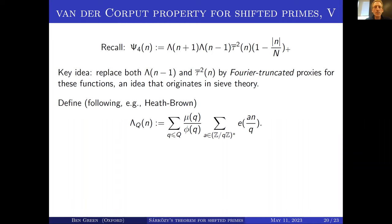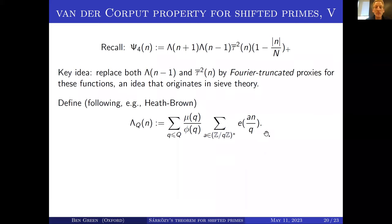Here is an example of a Fourier-truncated proxy for the von Mangoldt function, which I learned from work of Heath-Brown. This function λ_Q is the sum over q < Q of (μ(q)/φ(q)) times basically a Ramanujan sum — the discrete Fourier transform of the residues coprime to q. This function has been cooked up so that its Fourier behavior at rationals mimics that of the von Mangoldt function, but it's entirely supported on rational frequencies with fairly small denominator.